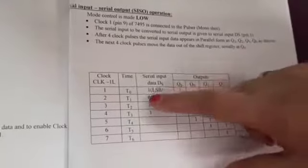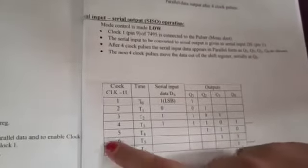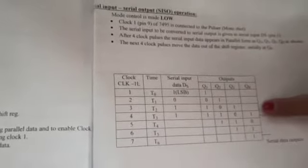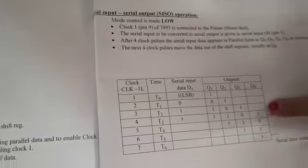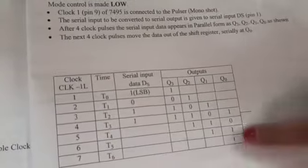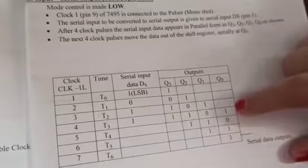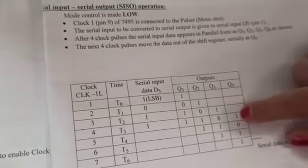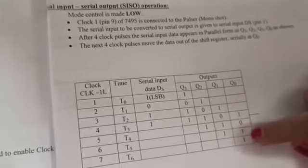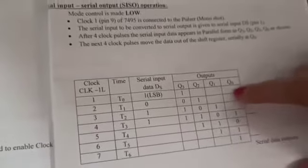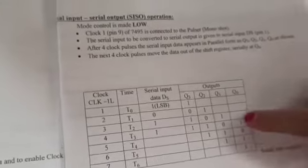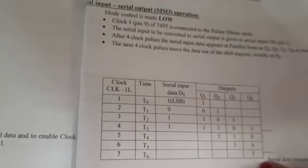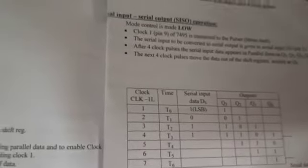The next operation is SISO — serial in serial out. After completing SIPO and obtaining output 1101, for serial in serial out we observe only the Q0 bit; Q3, Q2, Q1 are don't care. At the first clock pulse 1 is entered and Q0 is 1, at the second pulse Q0 is 0, at the third pulse Q0 is 1, and at the fourth pulse Q0 is 1. So serially we get the data 1, 0, 1, 1.